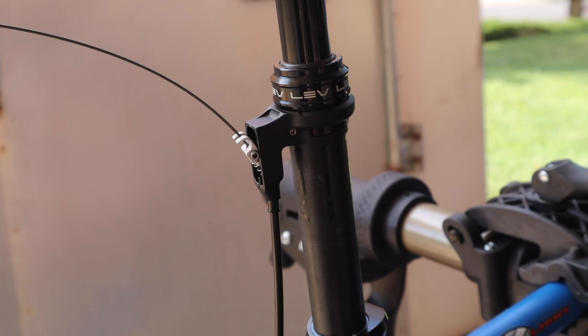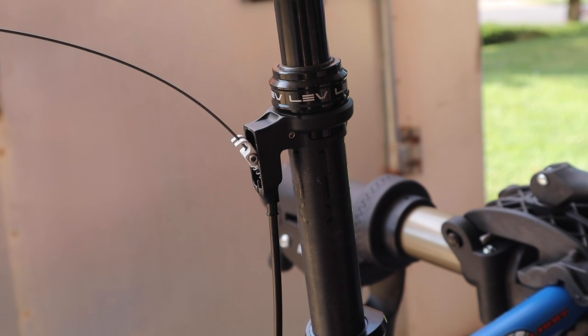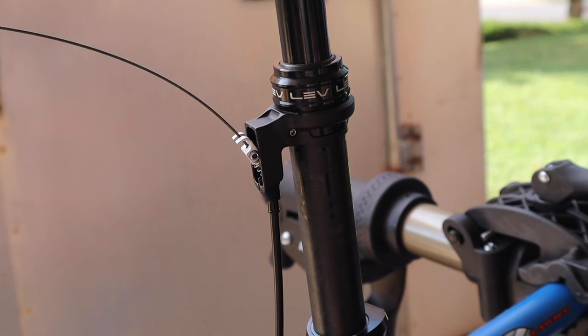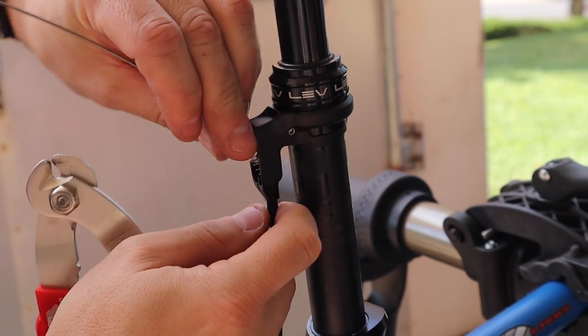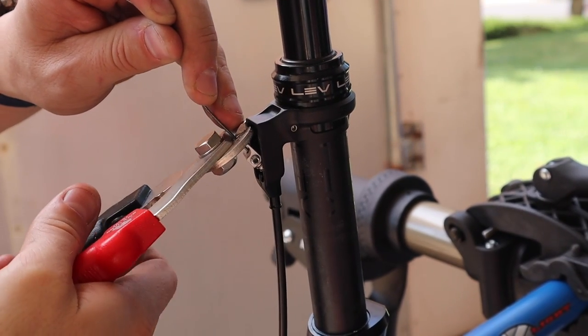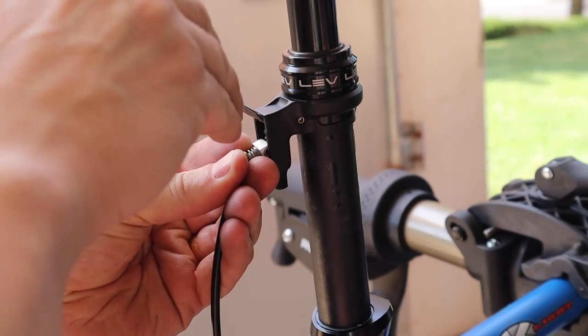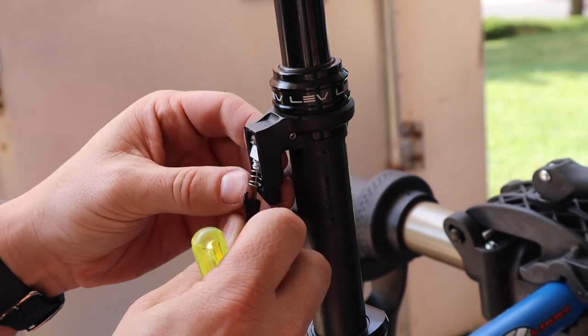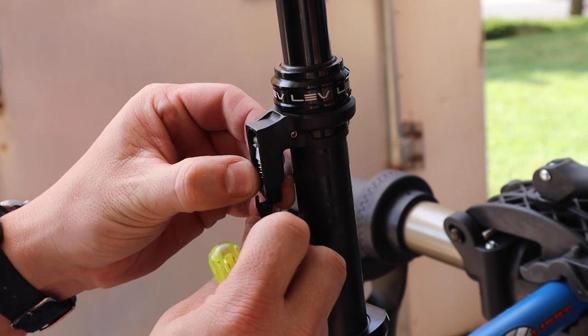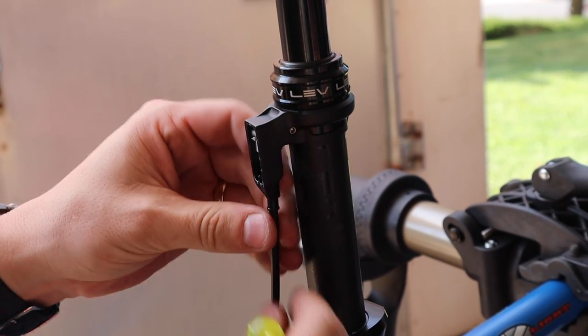What's kind of fun is that I was able to reuse the cable routing for the bottom, for the front derailleur, for this dropper post cable since we're not running a front derailleur. Came in handy, took just a little bit of rigging.